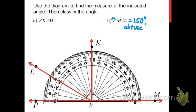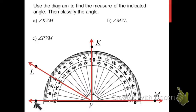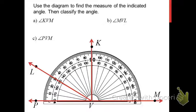Now here's an interesting one: angle PVM. If you look at P, the vertex V, and M, those three points are collinear with one another. If the two sides of an angle are collinear, what that means is that you have a straight angle. If we say this side is at the zero, then the other side has to go through 180. The measure of angle PVM is 180 degrees, and any angle that's 180 degrees is a straight angle.